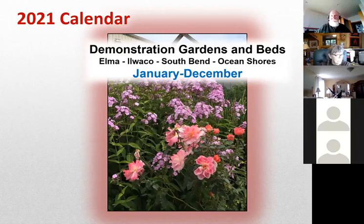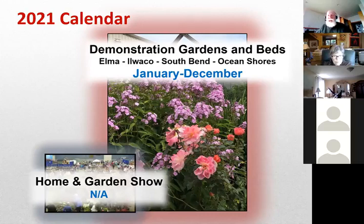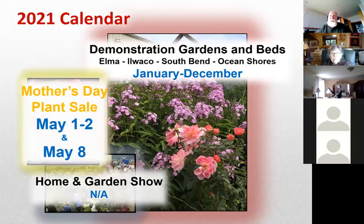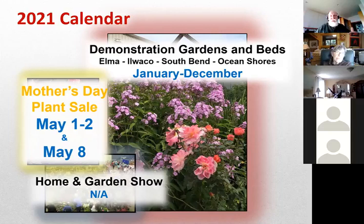The Home and Garden Show, normally scheduled for the weekend after Mother's Day, is again canceled for 2021. We are hoping to resurrect some of those activities later in the garden tour. Shout-out to the Mother's Day plant sale occurring across two weekends — May 1st and 2nd, as well as Saturday May 8th in Ocean Shores. Terry, if you're on, do you have any other comments you want to share with respect to the Mother's Day plant sale?